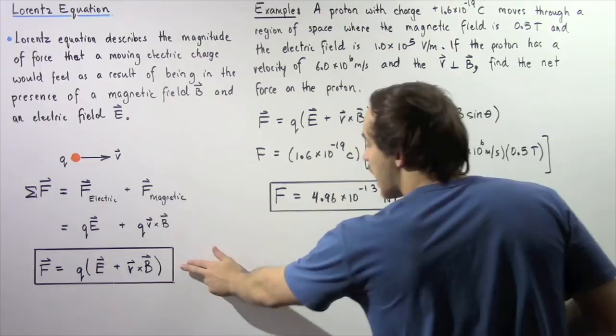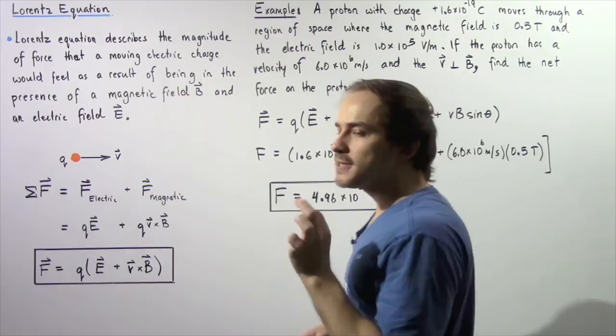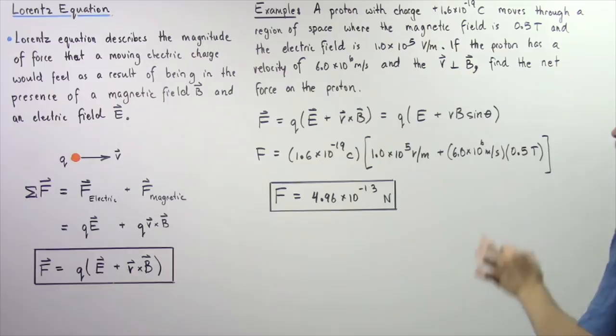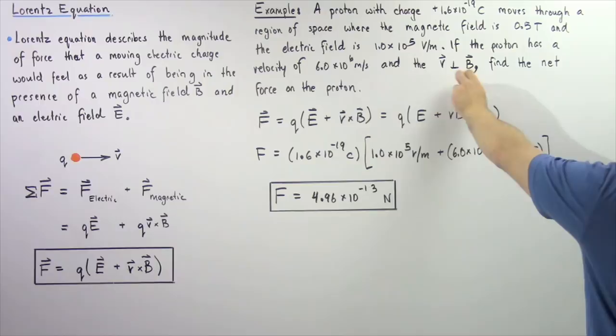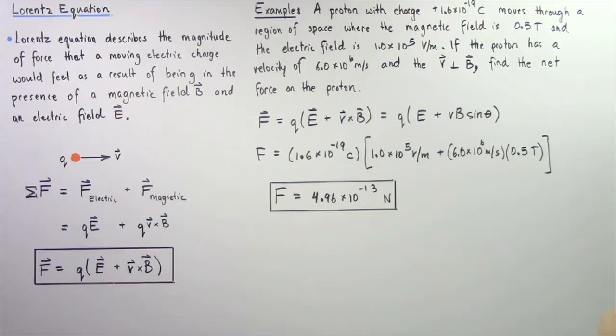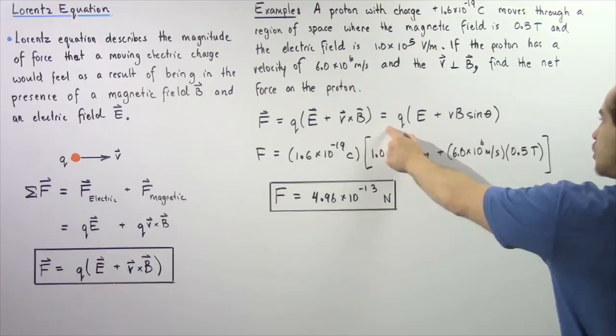So we apply and state this equation. By definition of the cross product, the cross product of V and B is equal to the product of the magnitude of V, the magnitude of B, and sine of the angle theta between these two vectors. The angle between these two vectors is 90 degrees, and sine of 90 is equal to 1. So this equation simply becomes: force is equal to Q multiplied by E plus V multiplied by B.